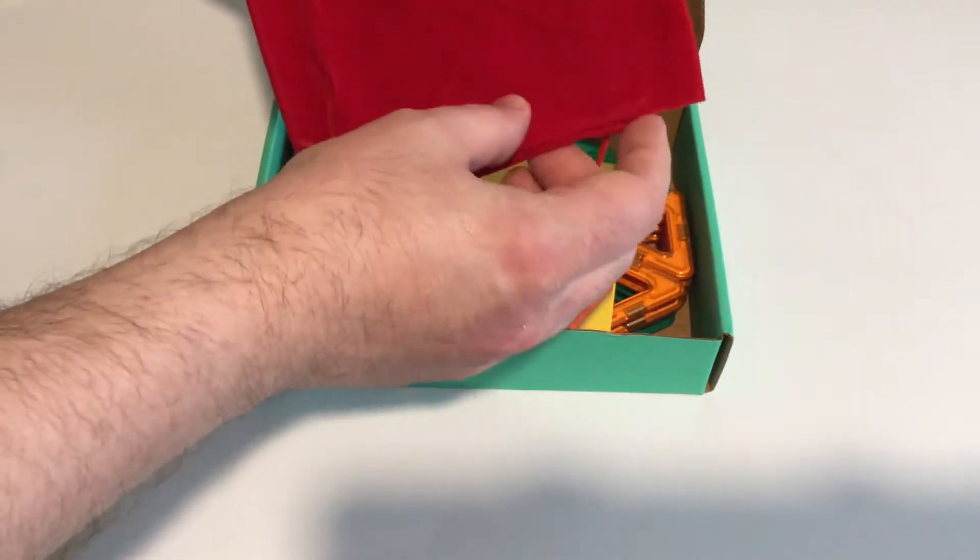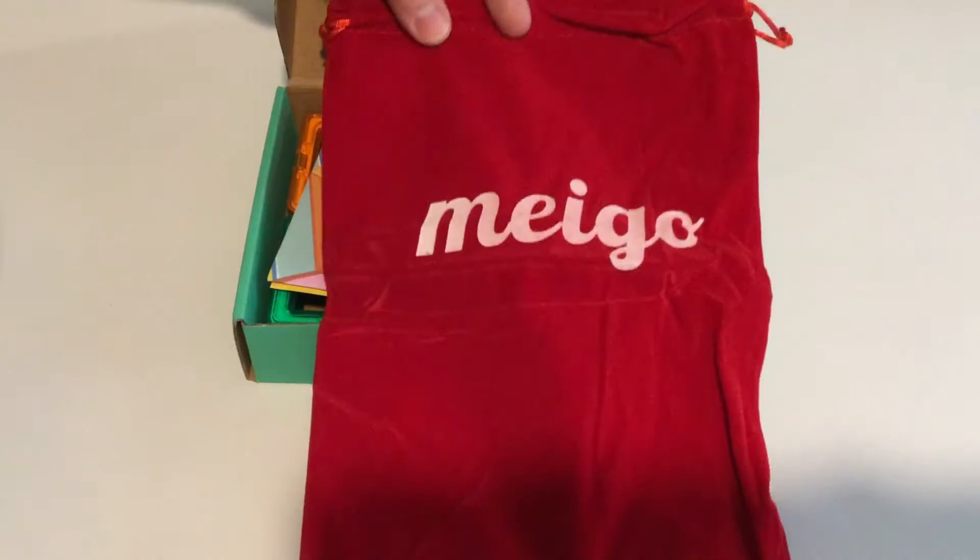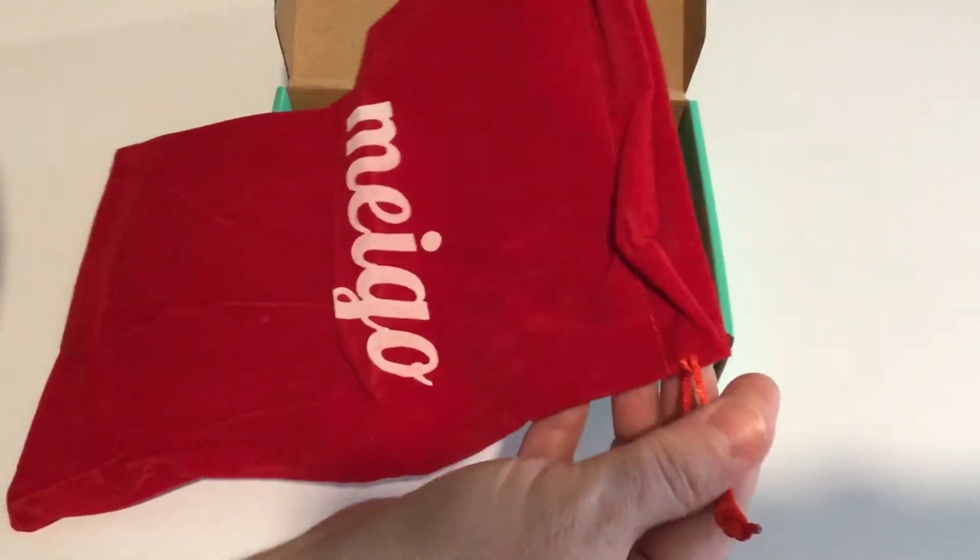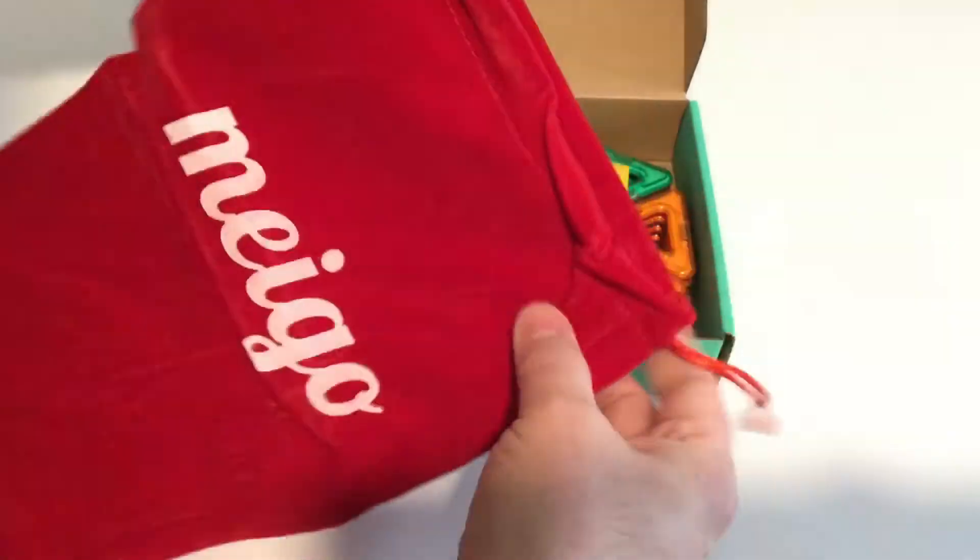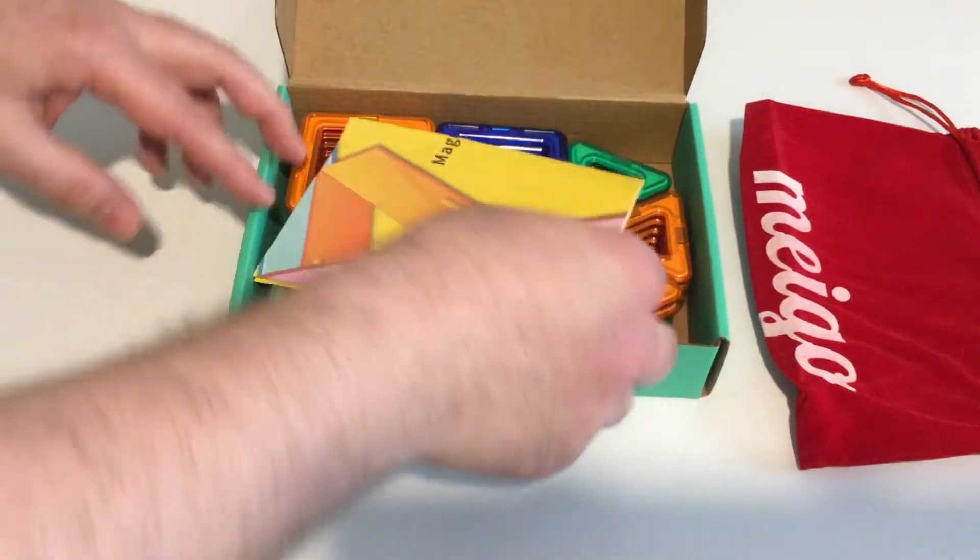Comes with this really nice velvet-like pouch to store them in. Once you do take them out of the box here, really nice. Has the Miyago logo on it. It's got a drawstring top there. Just place that on the side. See what else we've got here.